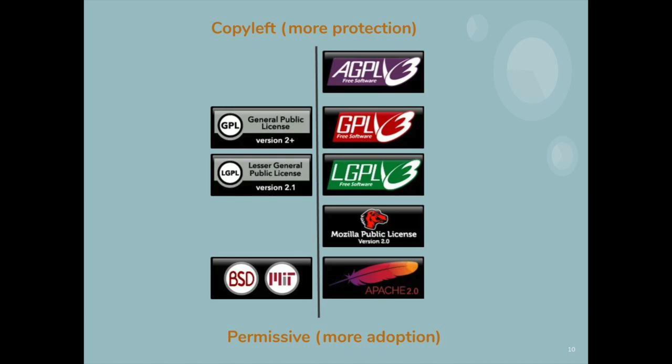I'd like to focus your attention on the Mozilla Public License 2.0. This is an interesting license because it is compatible with both GPL 2 and LGPL 2.1, and also with the version 3 licenses — GPL 3, LGPL 3, and AGPL 3. This compatibility can be helpful if you want to choose a license that maximizes copyleft compatibility.